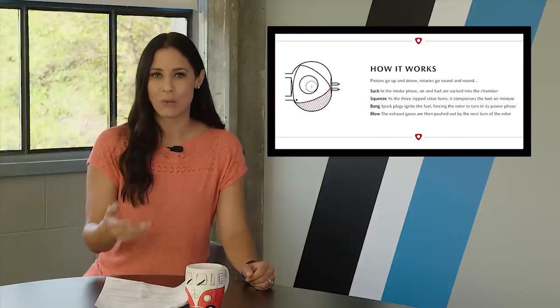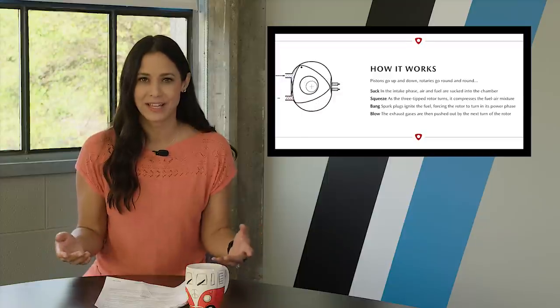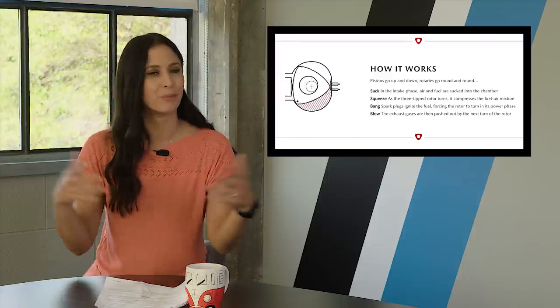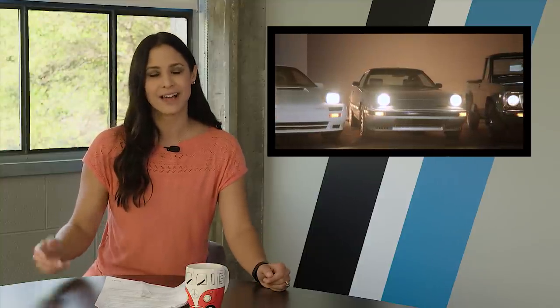But if you wanted to make more power, it's kind of like a Lego set. All you have to do is bolt the rotors together and boom, more power. Now Mazda used this technology in a lot of its cars. From the 1967 Mazda Cosmos Sport 110S to the famous FD RX-7 of the 90s.